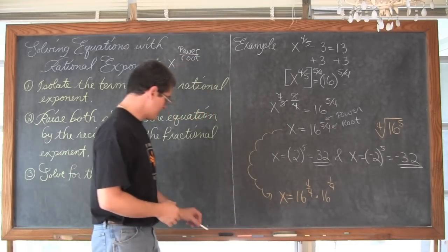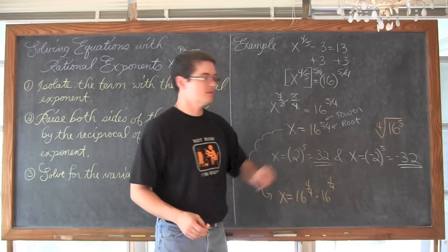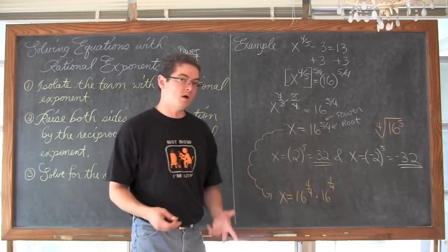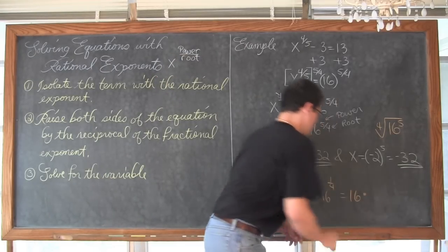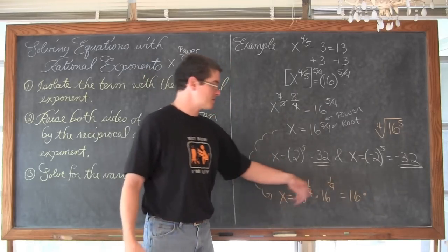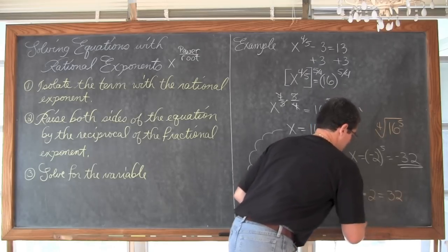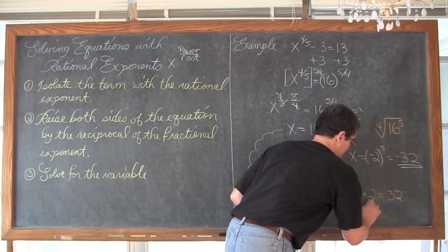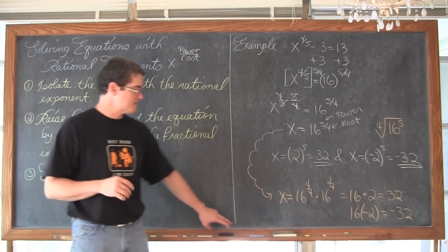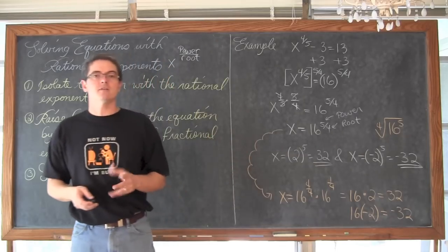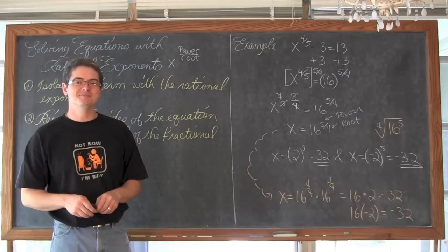So here, going back to sort of this alternative way of thinking of how to get the answer, fancy way of writing 16 to the 5 fourths power. Well, 4 divided by 4 is 1. So this is just going to be 16. And then the fourth root of 16, again introducing our own even root, is either 2 or negative 2. So it is 16 times 2, which is 32. Or 16 times negative 2, which is negative 32. So that is the end of our first example. A couple of ways to think about the final step there and getting those final values of 32 and negative 32. Let's get to our next one. Our next example that is.